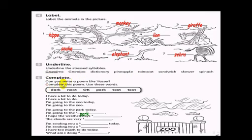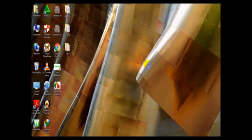Exercise six. Complete. Can you write a poem like Yassir. Complete the poem. Use these words. Dark, next, okay, park, text, and text again. I have a lot to do today. I have a lot to do. I'm going to the zoo today. I'm going to the zoo. I'm going to the park today. I'm going to the park. I hope the weather stays. Okay. The clouds are very dark. I'm sending you a text. I have too much to do today. What am I doing? Next. Till we meet again. Thank you and goodbye.